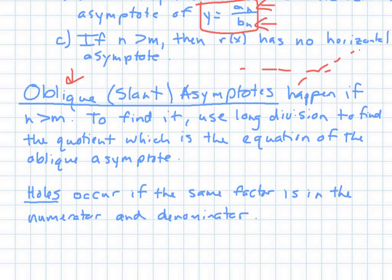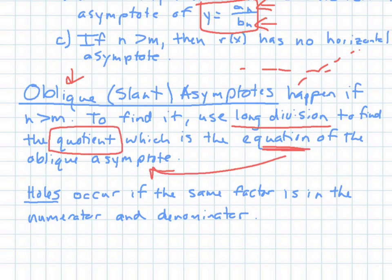To find the oblique asymptote, you need to use long division. They say long division because sometimes your denominator has a power greater than 1, so it's not a binomial. If it is in binomial form — like x minus 3 — you can use synthetic division to make it go faster. When you do the division, the quotient gives you the equation for your oblique asymptote — essentially a slope-intercept form equation — and that's how you graph that line.